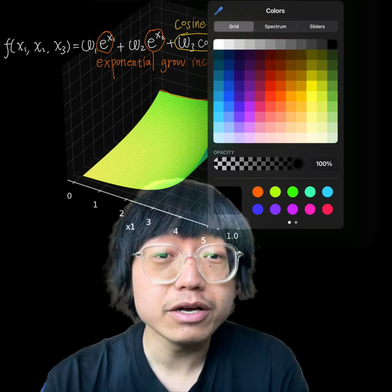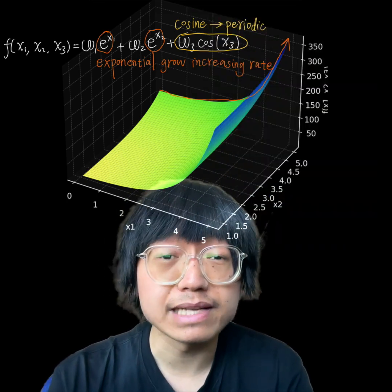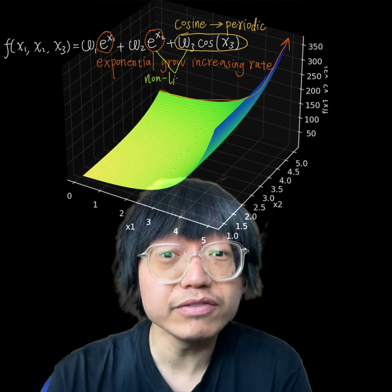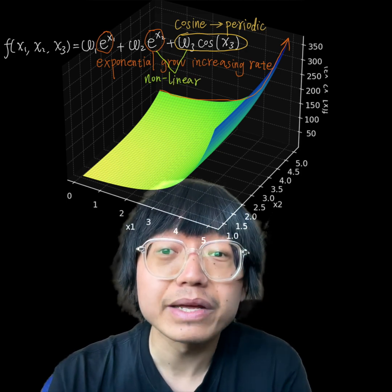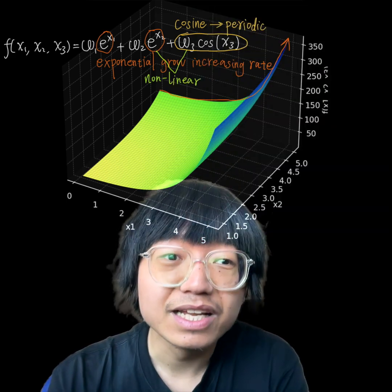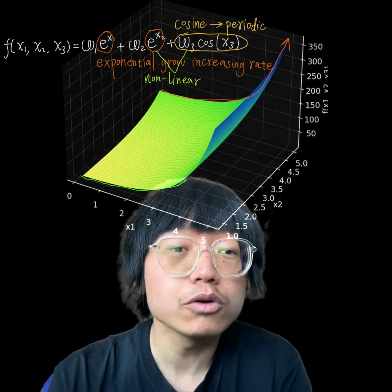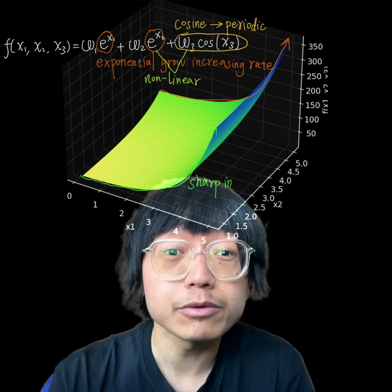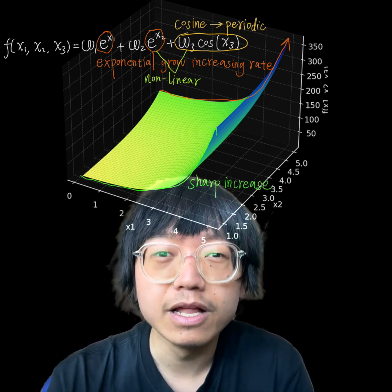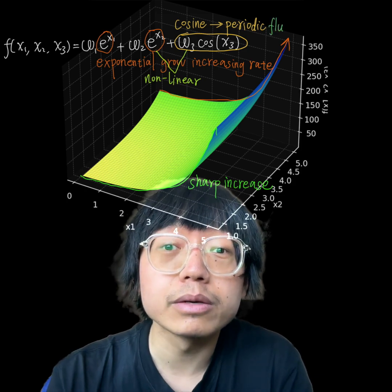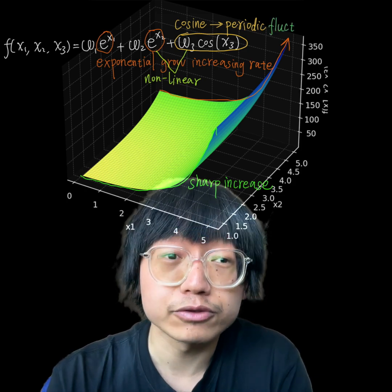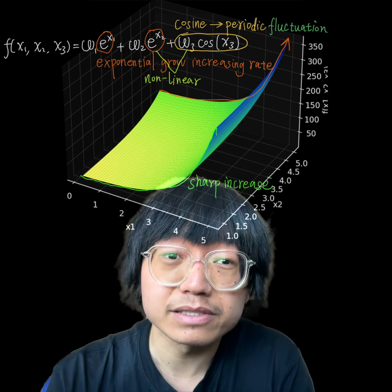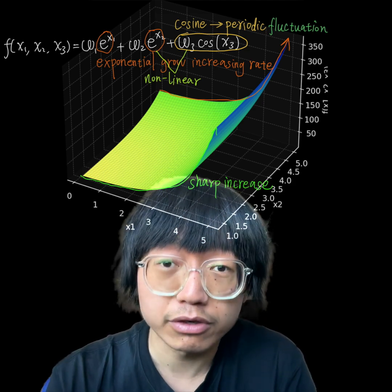The exponential growth due to e^x₁ and e^x₂ is evident, showing sharp increases. The cosine term for cos(x₃), although not shown separately in this coordinate system, would also introduce periodic fluctuations, adding a nonlinear dynamic different from the exponential growth.